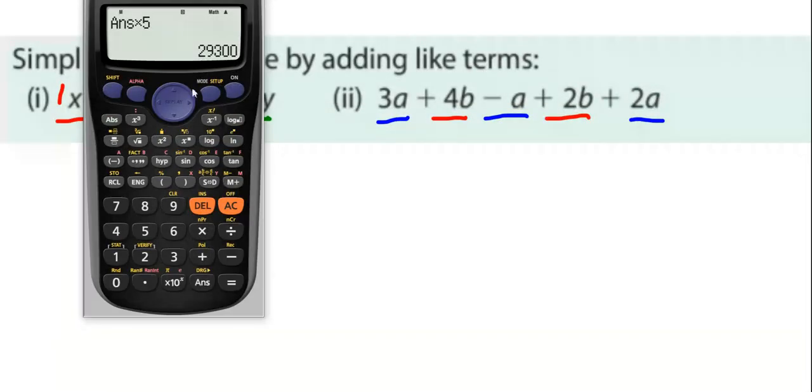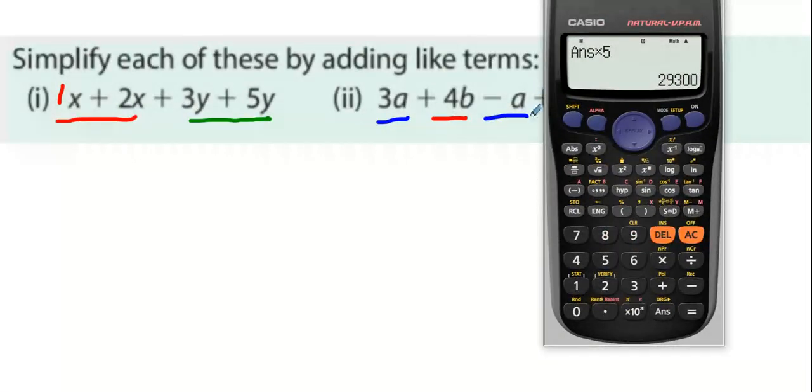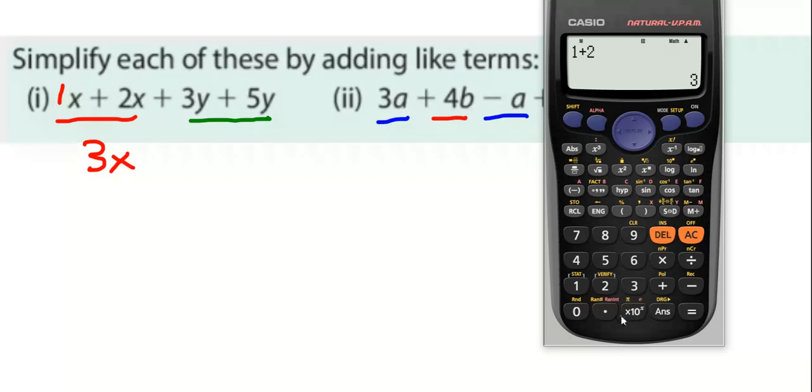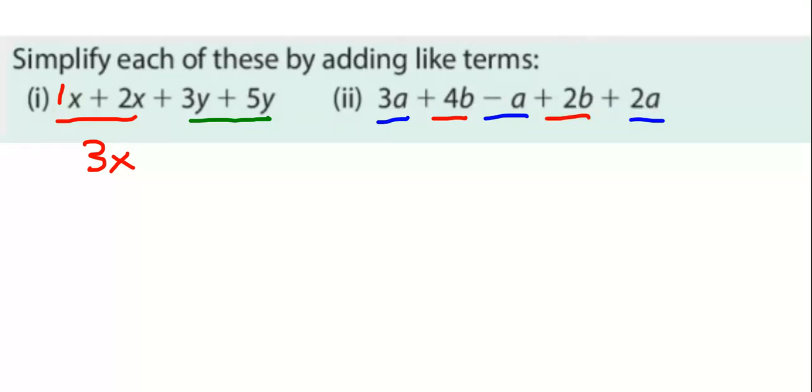What you could do is ignore the X exists and just do one plus two. And that would imply that there's three X's. Then ignore the Y exists. And you're going to do three plus five. Eight Y's.